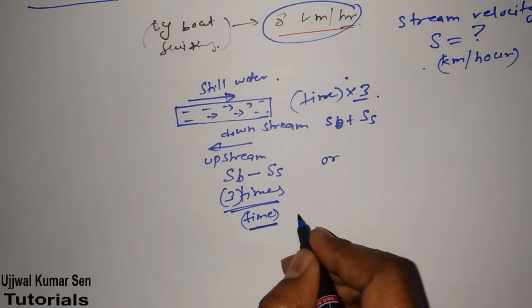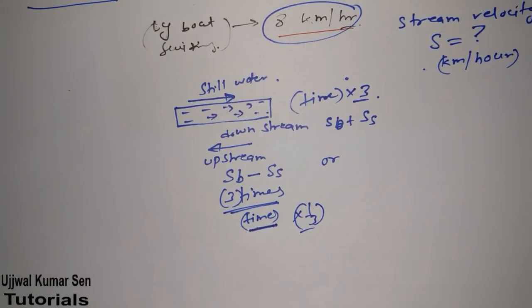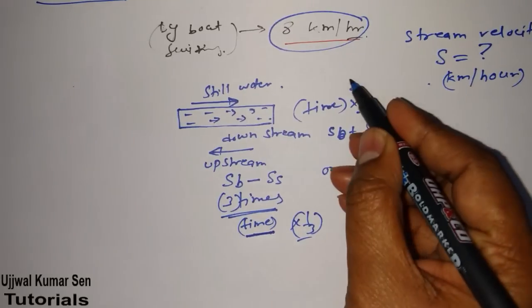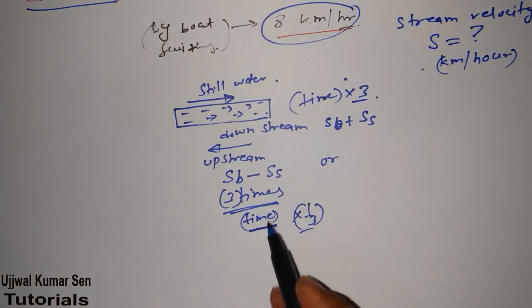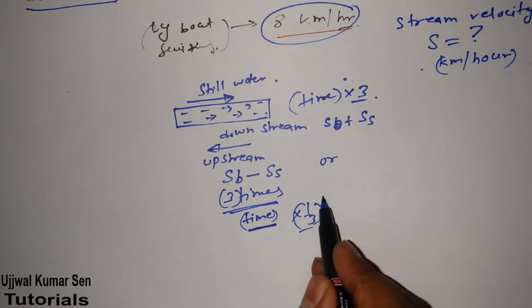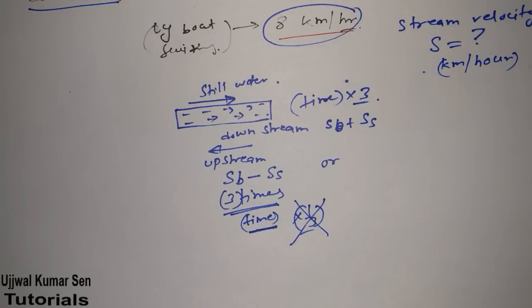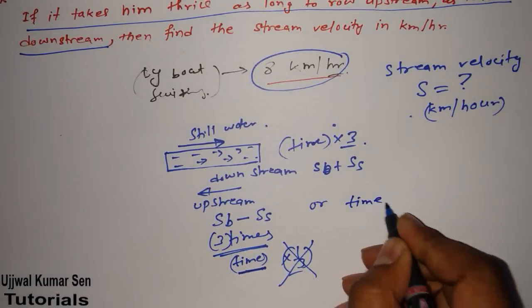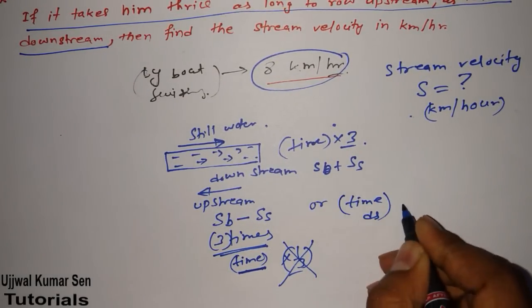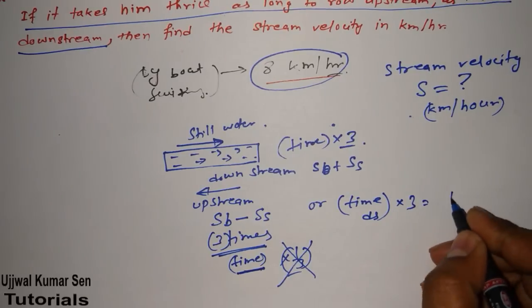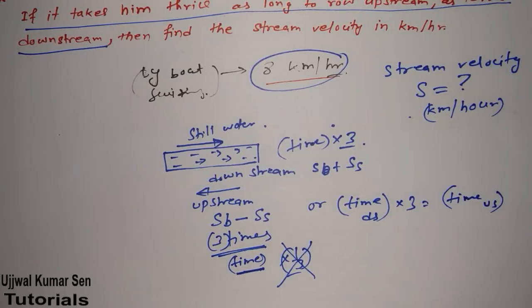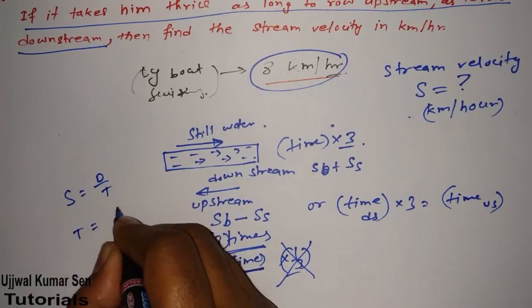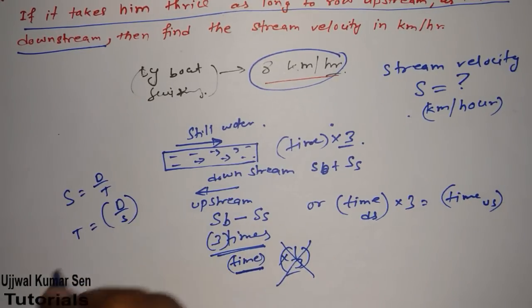Or, I have another option too. I can multiply one by three here also. But, both the things are same. Either you multiply here by three, or you can multiply here by one by three. Both are same. So, only one step can help you. So, what we can do here, time taken by downstream, multiplied by three is equal to time taken by upstream. Now, we know that speed is equal to distance by time. Therefore, time is equal to distance by speed.